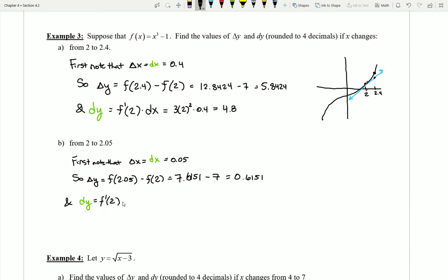I can now calculate dy, which is going to be f prime of 2 times my dx. My derivative is still the same. My tangent line was still constructed at 2, so I'm still going to get 3 times 2 to the second power, but now I'm just going to multiply by 0.05 as opposed to 0.4. When I do this, I end up with a value of 0.6.